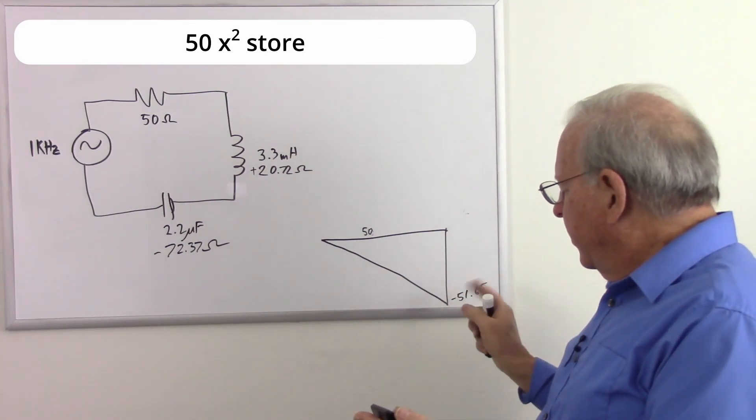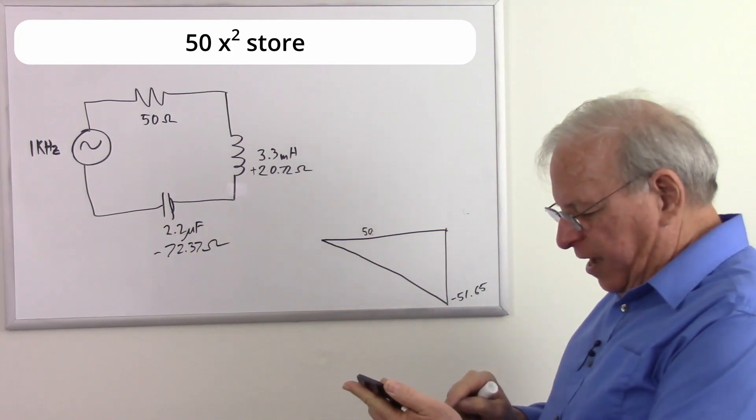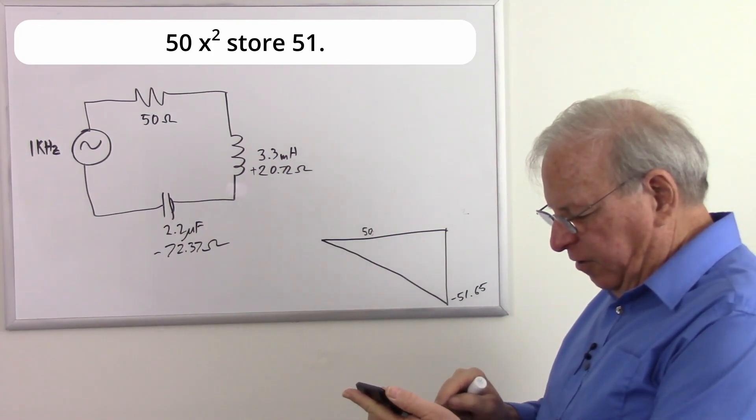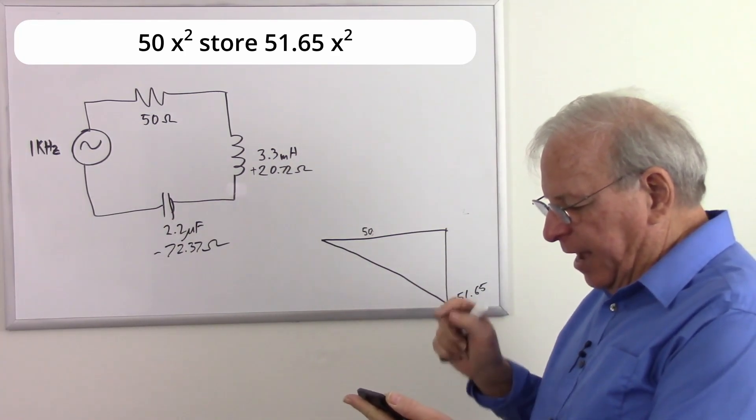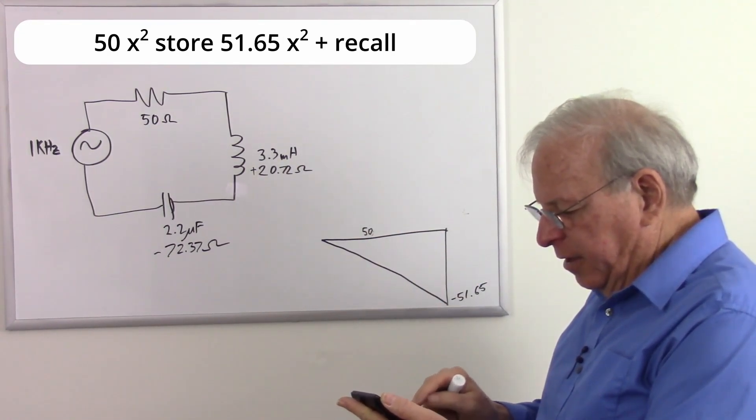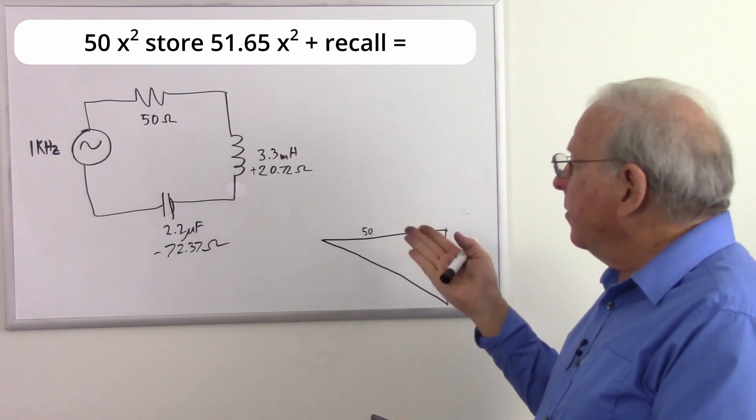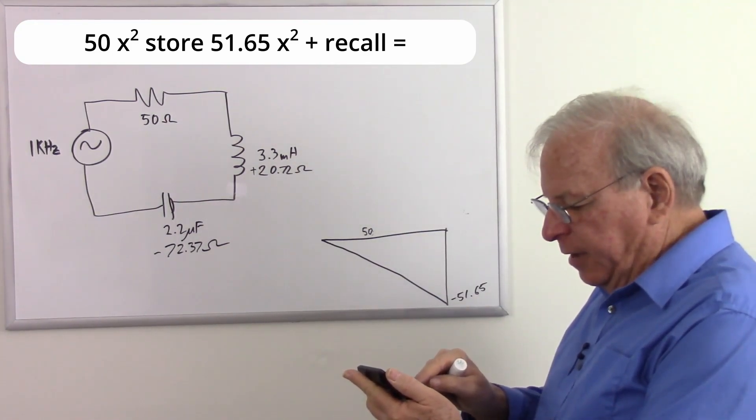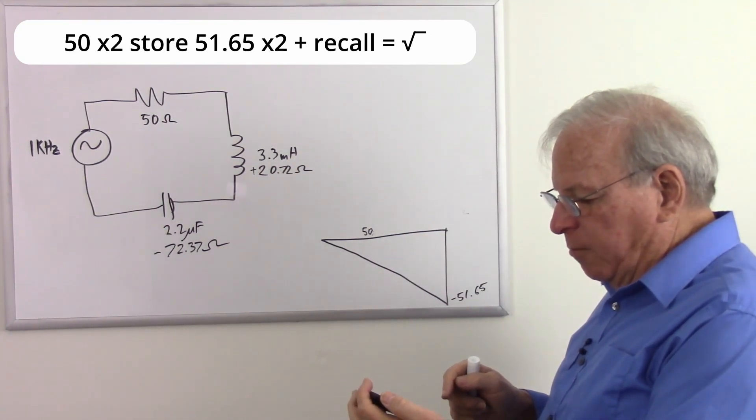So here goes 50 squared, store that away. Then we take 51.65, square that, add that to the square of our resistance, we get a number that we take the square root of, and I got 71.8.